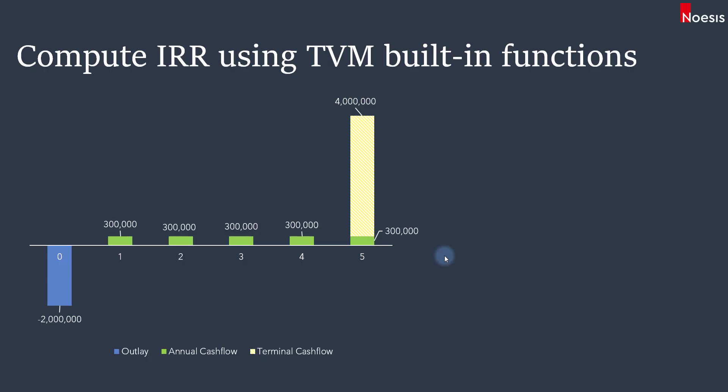Let's take a look at an example cash flow for a project of five years. At time zero there is a cash outlay of two million dollars, and then for the next five years there is an annual cash flow of three hundred thousand dollars per year. In the terminal year, year five, there is a one-off cash inflow of four million dollars.